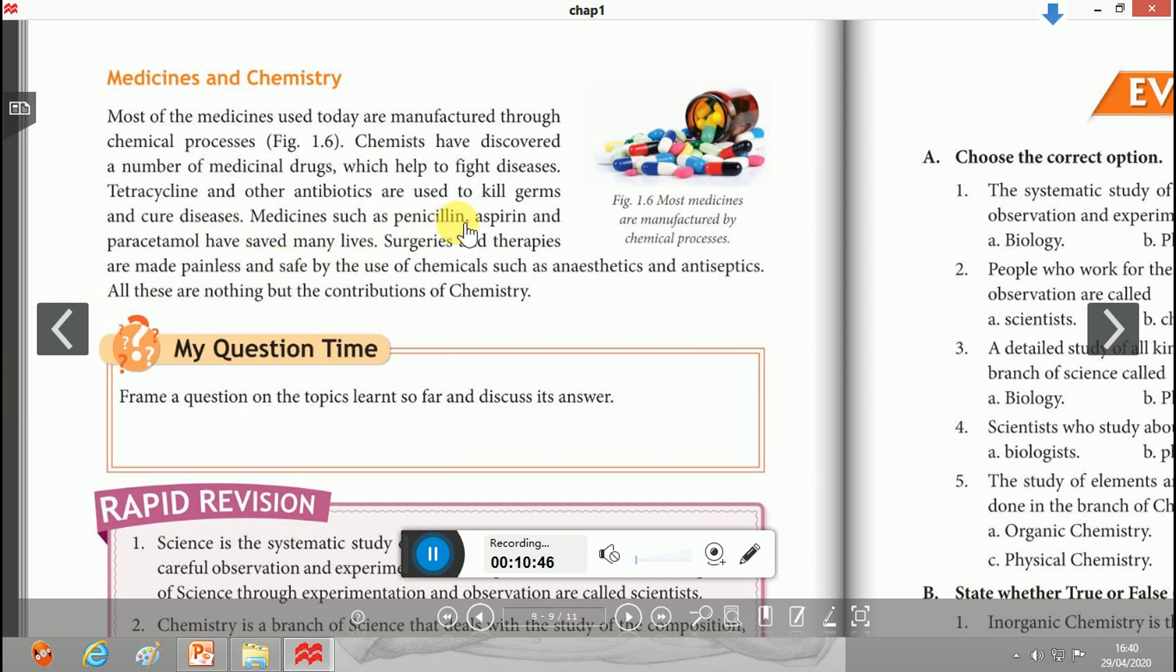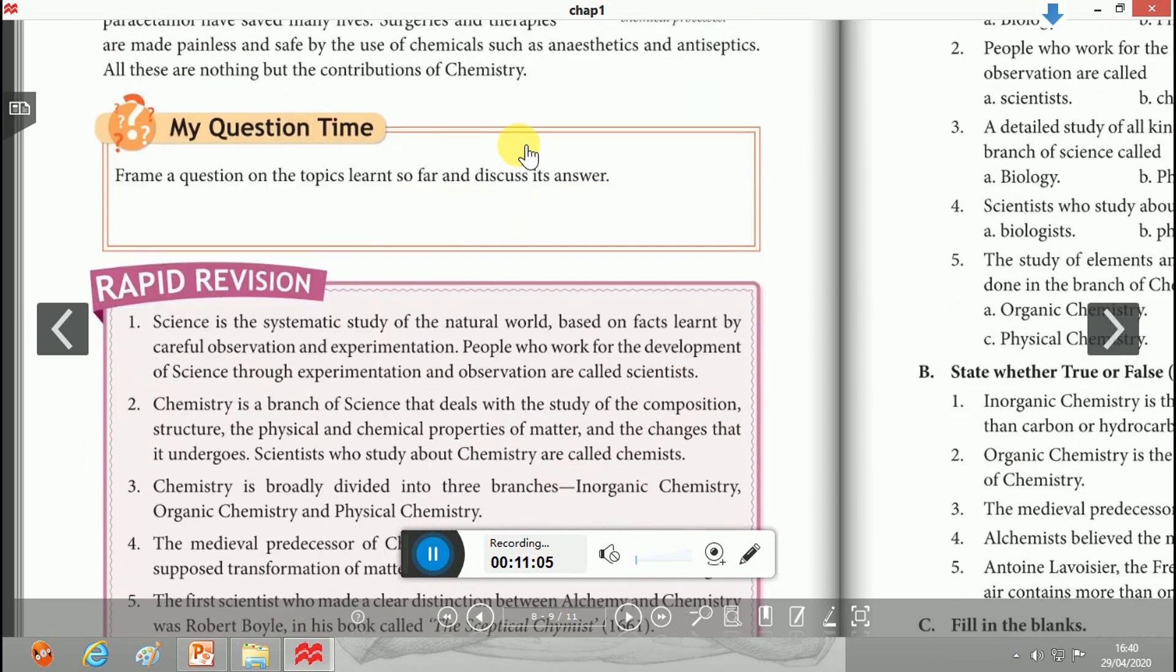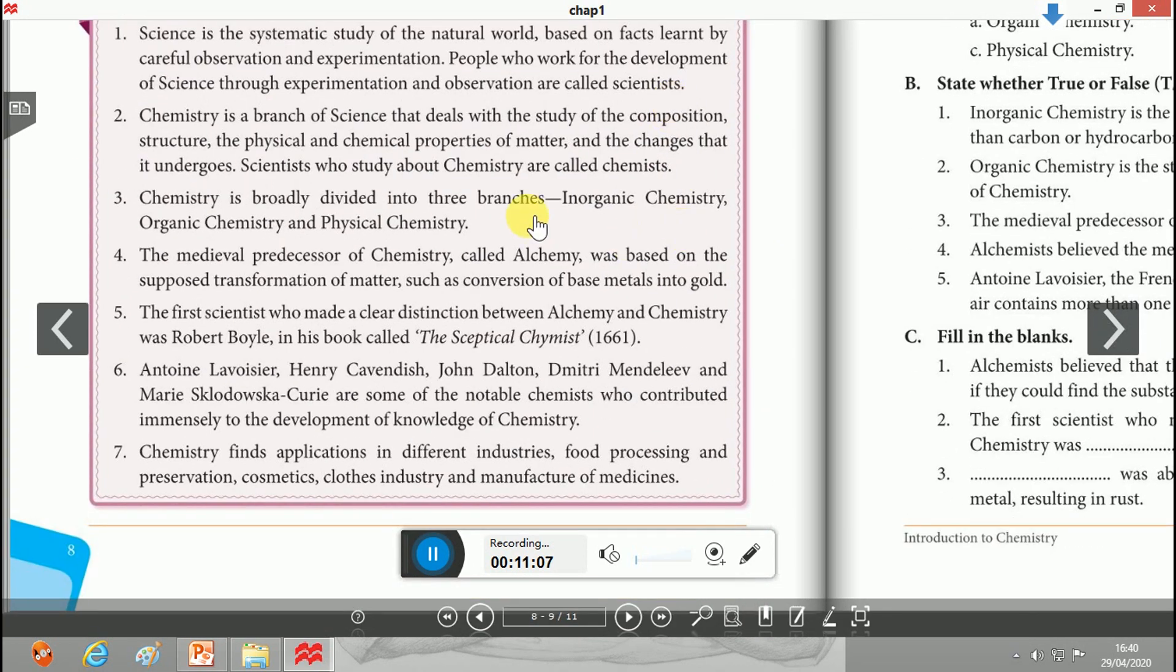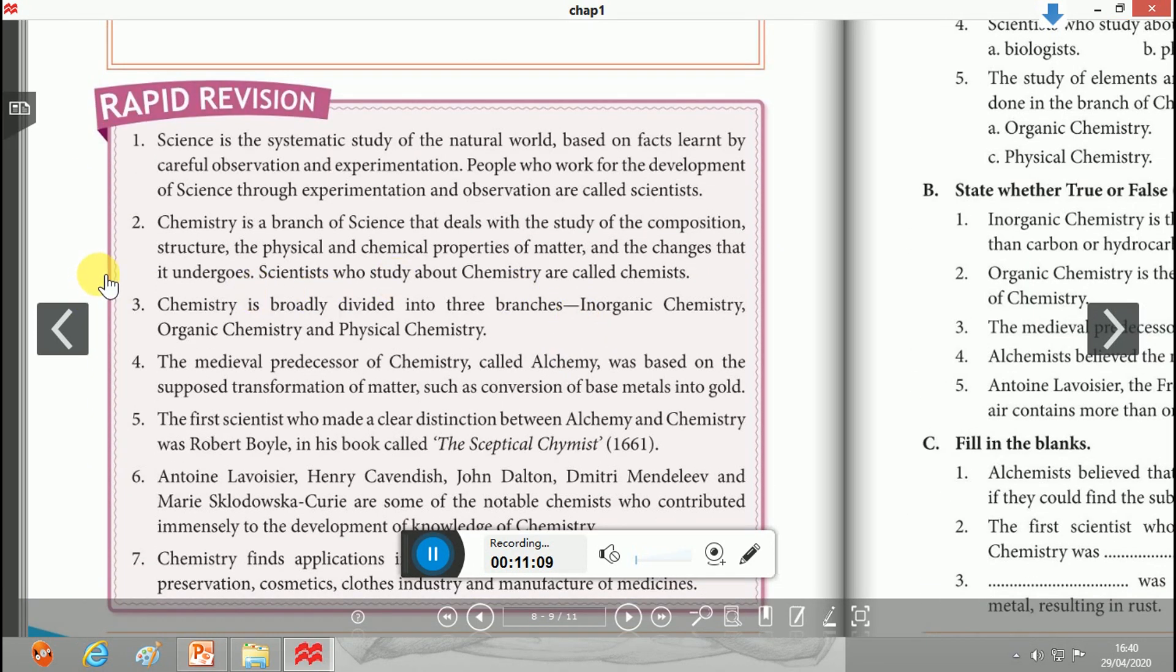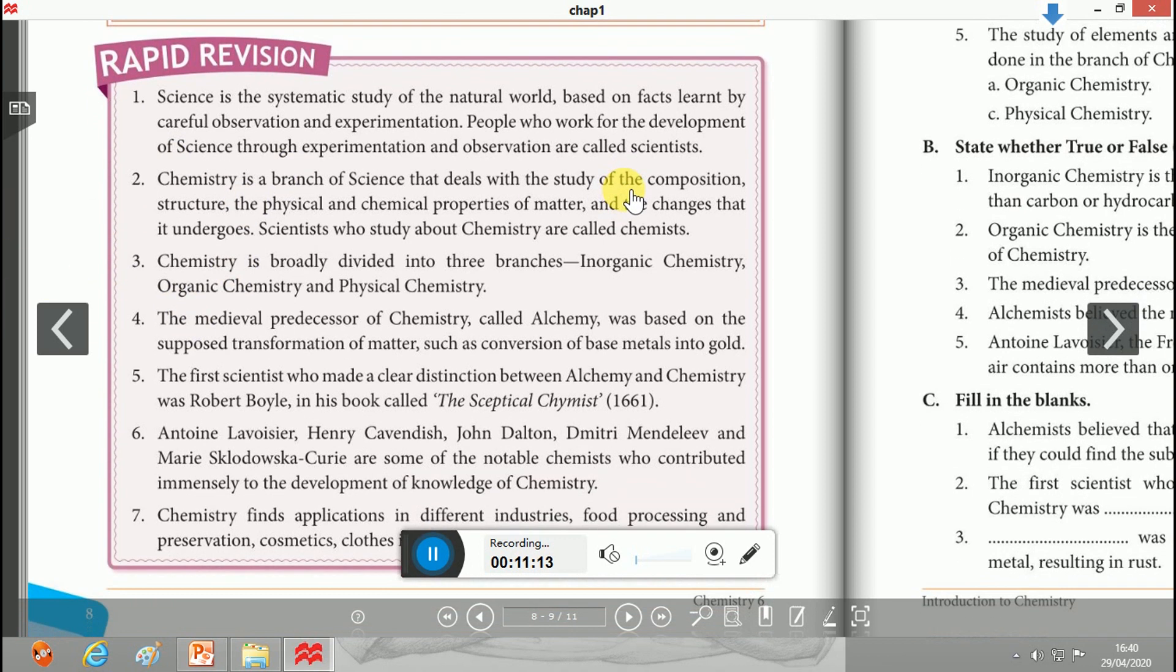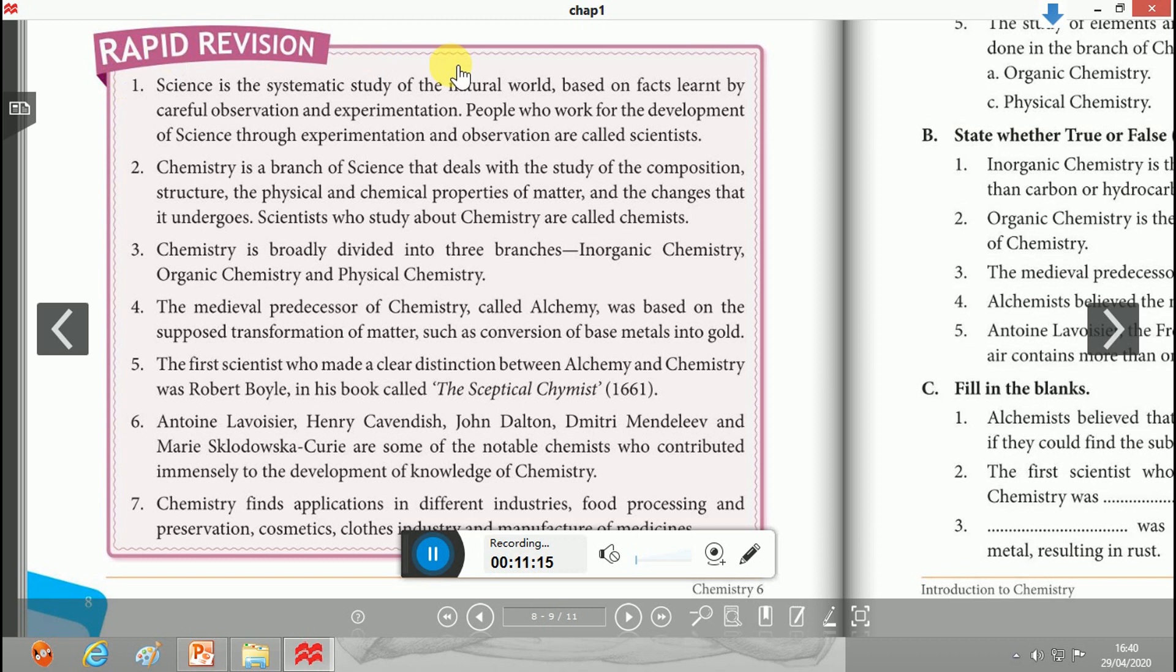So these are all chemical substances. Surgeries and therapies are made painless and safe by the use of these chemicals. That means we can conclude that all these are nothing but the contributions of chemistry. So we reached the end of this chapter.